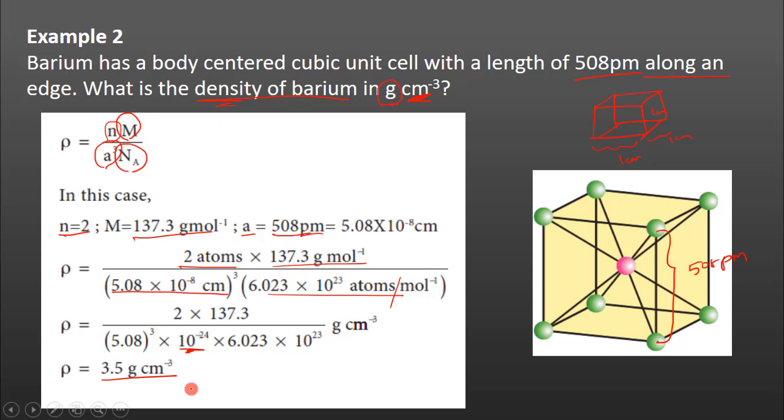That is the density of the barium unit cell. The density of barium is 3.4 grams per centimeter cube.